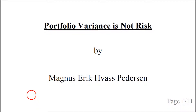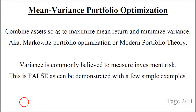Hello, my name is Magnus Petersen. This talk is about mean variance portfolio optimization and how the variance does not measure risk. The idea in mean variance portfolio optimization is to combine assets so as to maximize the mean return and minimize the variance. This is also known as Markowitz portfolio optimization or modern portfolio theory. The variance is commonly believed to measure investment risk, but we will show in the next few examples that this is false.